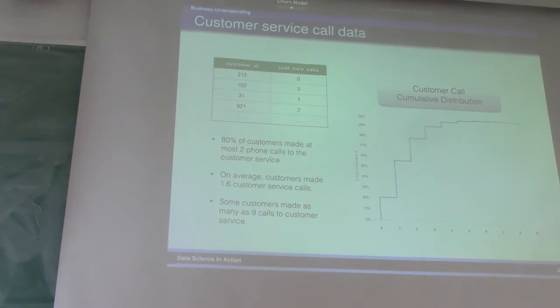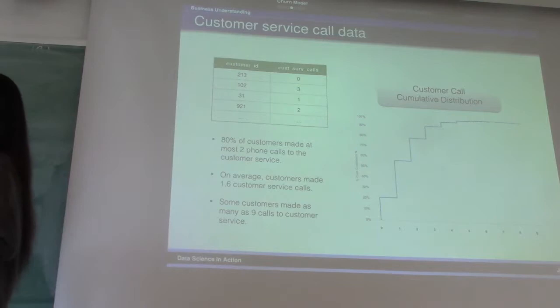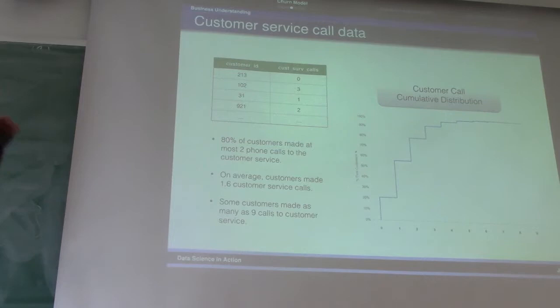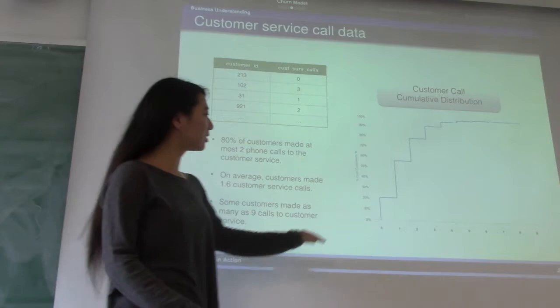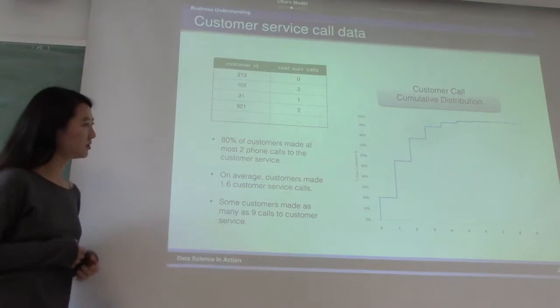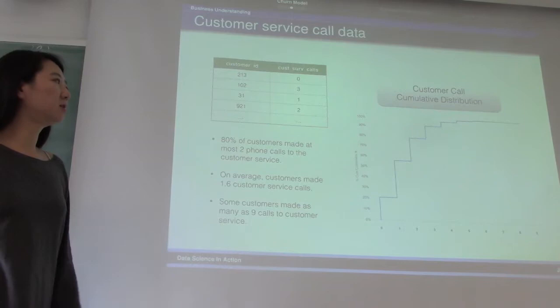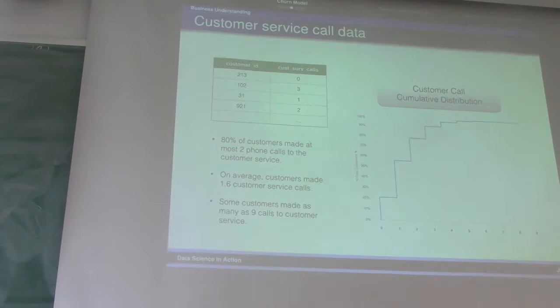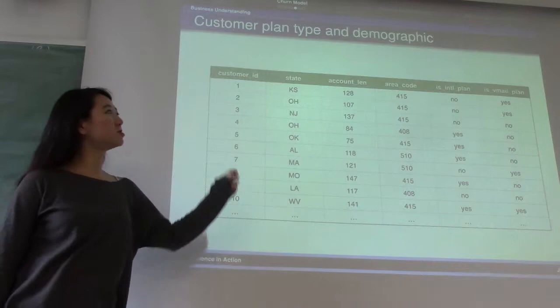Our next set of data: customer service phone calls, basically record the number of customer service calls. These data sets will come from different data sources. This will typically come from customer service logs and then aggregate at each customer's level of data. We can look at the customer phone call cumulative distribution. The horizontal axis means the number of phone calls, and the vertical axis means the cumulative distribution. We see most customers made maybe at most two phone calls. Some customers made as many as nine phone calls. On average, each customer made about 1.6 phone calls.